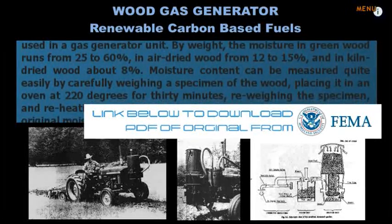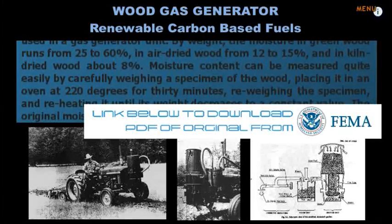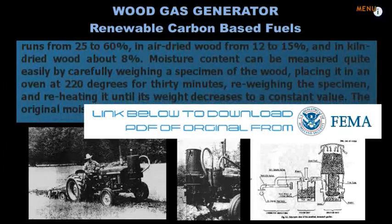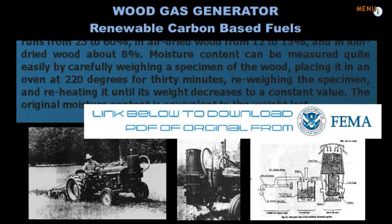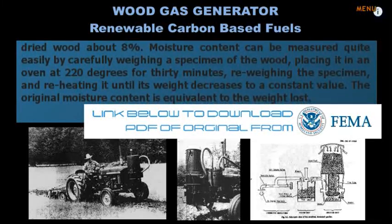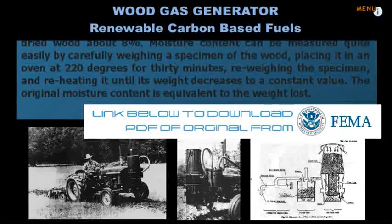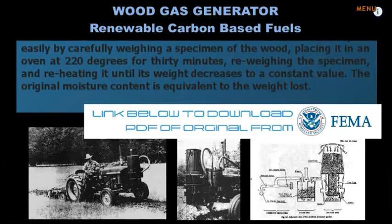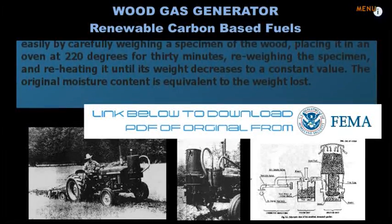Moisture content can be measured quite easily by carefully weighing a specimen of the wood, placing it in an oven at 220 degrees for 30 minutes, re-weighing the specimen, and re-heating it until its weight decreases to a constant value. The original moisture content is equivalent to the weight lost.